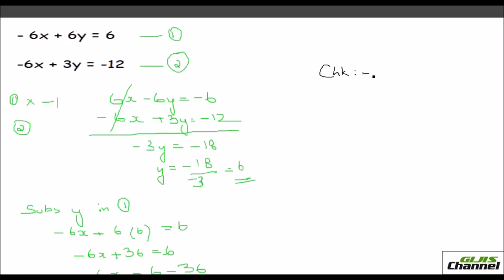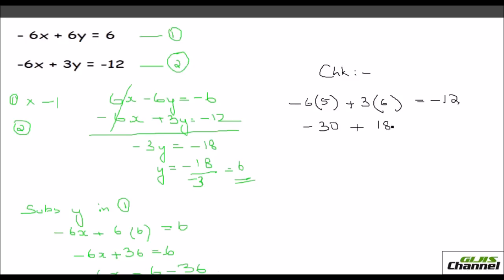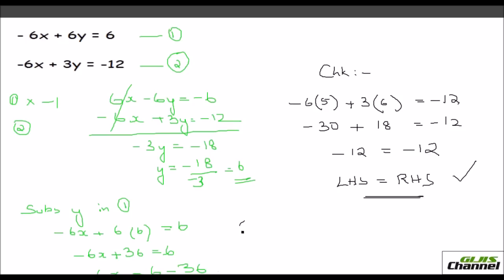Now check using the second equation. Substitute x equals 5 and y equals 6: minus 6 times 5 plus 3 times 6 equals minus 12. That gives negative 30 plus 18, which equals minus 12. Left-hand side equals right-hand side — the answer is correct. So x comma y equals 5 comma 6.